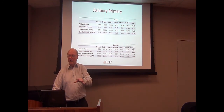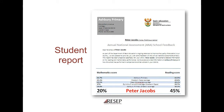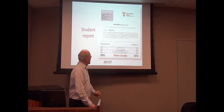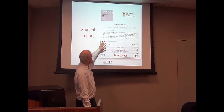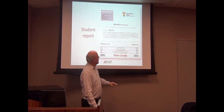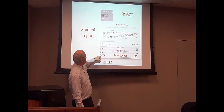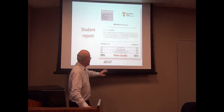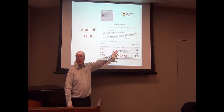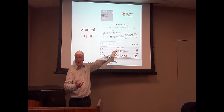We can go further and look at an individual child. For example, a hypothetical child — Peter Jacobs at Ashbury Primary — whose mathematics score was only twenty percent and reading score was forty-five percent. You can show how that compares to others in the school, the Western Cape average, the quintile average, and so on. Lots of information can be made available that would give parents what they need to hold schools and the system accountable.